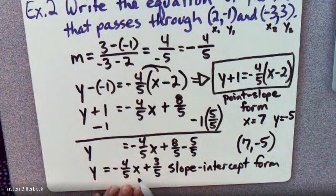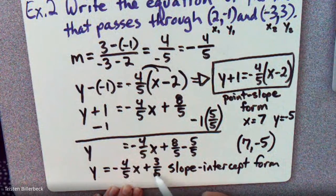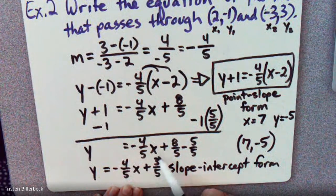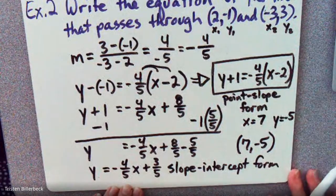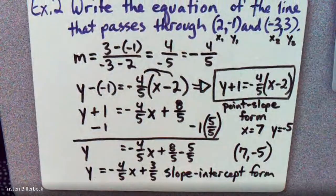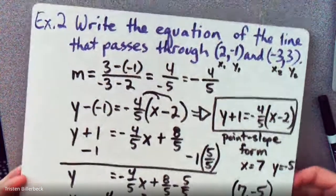Let's try that with the slope-intercept form. We have negative 3, so negative 4 times negative 3 is positive 12 over 5, plus 3 over 5 is 15 over 5, which is 3. So that works too. So you could use two different points. You can usually use this point since it was given to show how to make 5, so you can get rid of those 5s in the denominator.